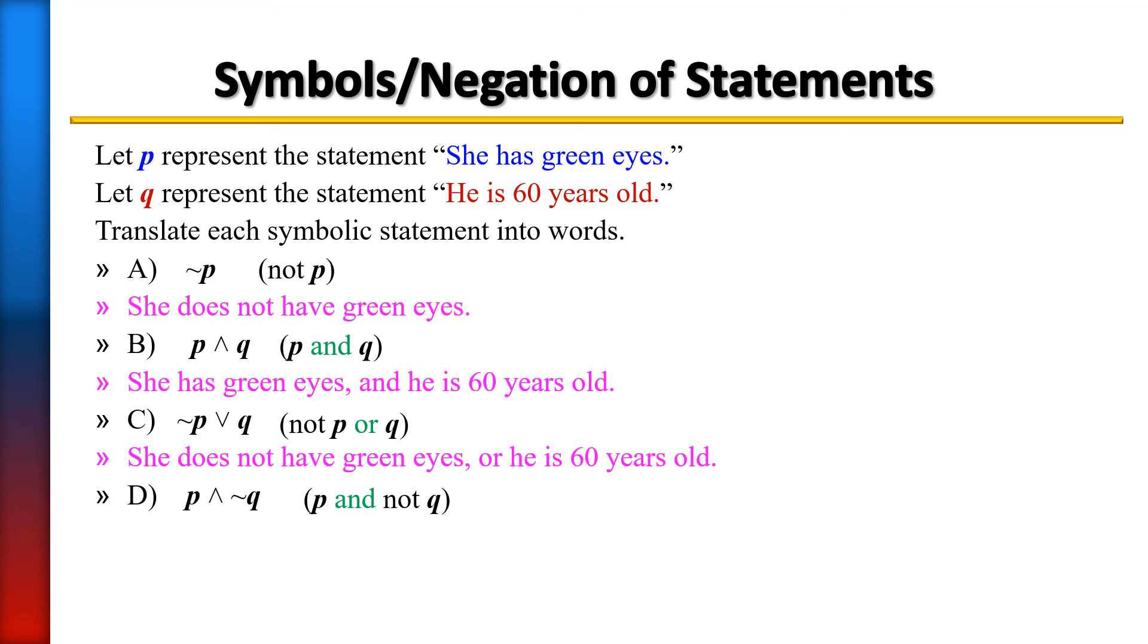So to write P and NOT Q would be 'She has green eyes, and he is not 60 years old.'